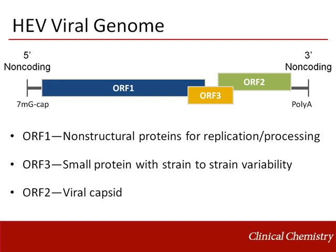Finally, ORF2 encodes the viral capsid, which initially is synthesized as a 660 amino acid monomer that goes on to dimerize and then form units of 10. These decamers are thought to be the antigen that stimulates our immune system when exposed to the virus. And, importantly for us in the lab, a deactivated version of the capsid still forms the basis of our serological test.